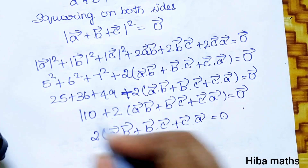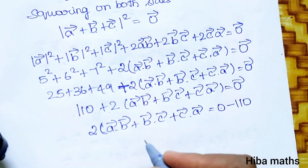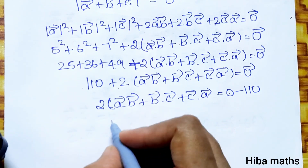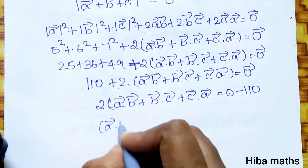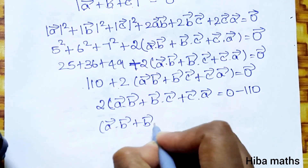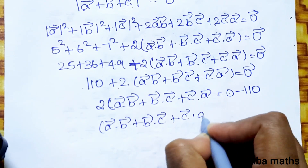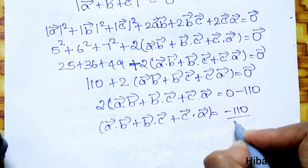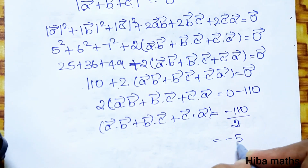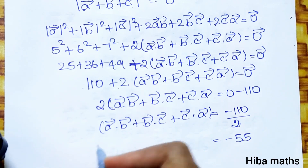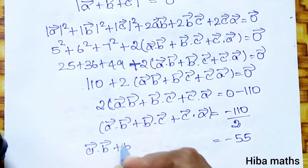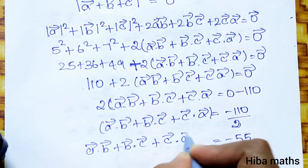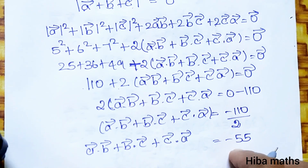Transposing, 2 times (a vector dot b vector plus b vector dot c vector plus c vector dot a vector) is equal to minus 110. Dividing both sides by 2, a vector dot b vector plus b vector dot c vector plus c vector dot a vector is equal to minus 55. Thank you so much for watching.